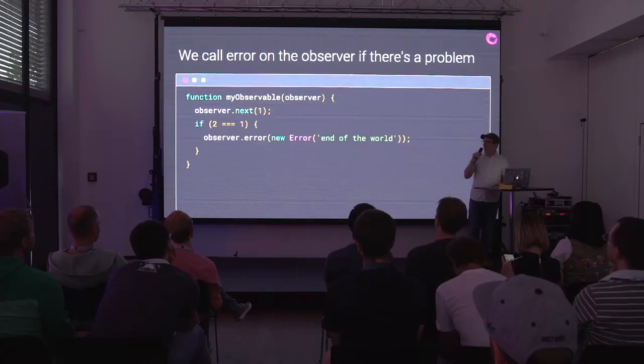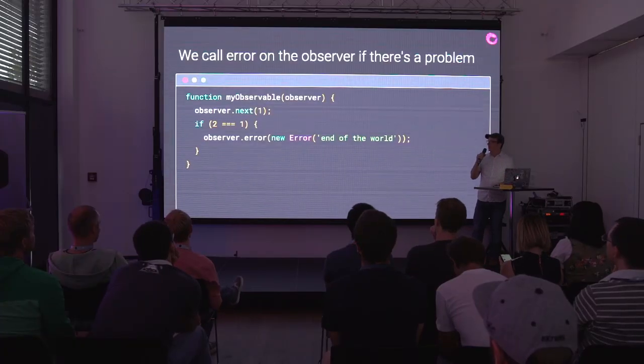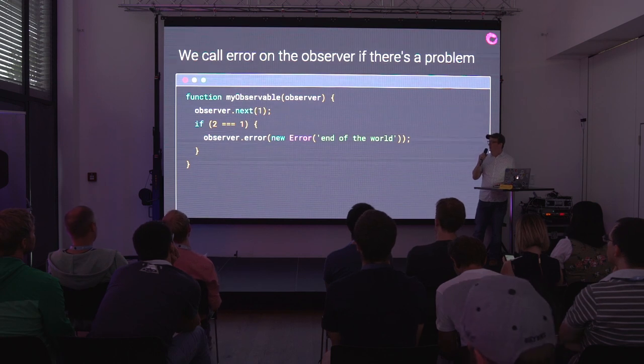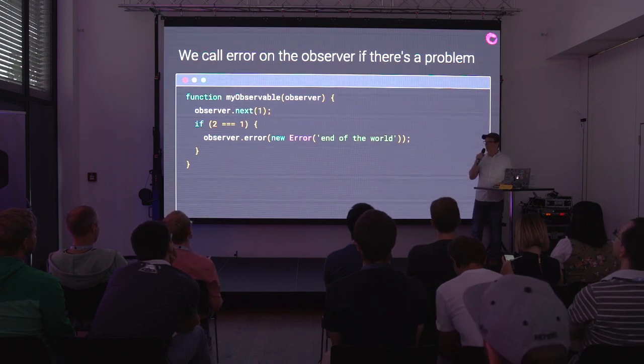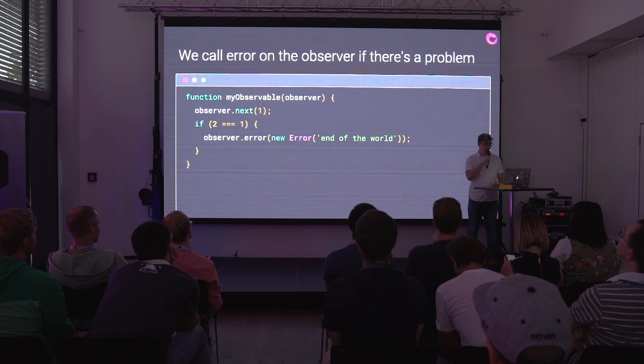There's also an error method. If for some reason two equals one, then the end of the world has occurred and we're going to tell everybody about that with our observable. We also have a complete method on our observer. Those are our three methods that exist on this object we're passing to our function.